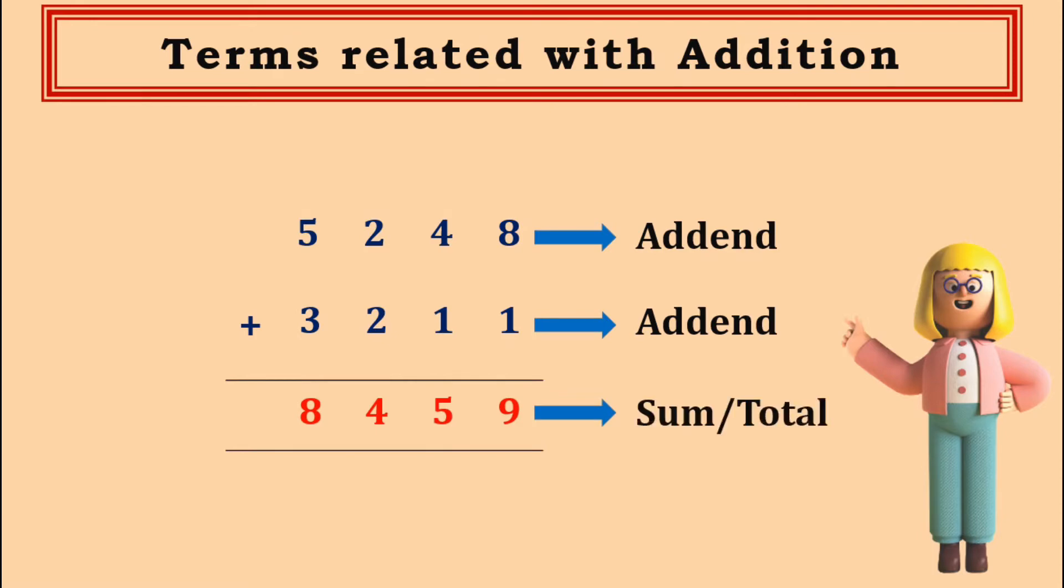Here in this example, 5248 and 3211 are the two numbers which we have added together and are the two addends. And the answer which we got after adding these two numbers, that is 8459, is their sum or total.